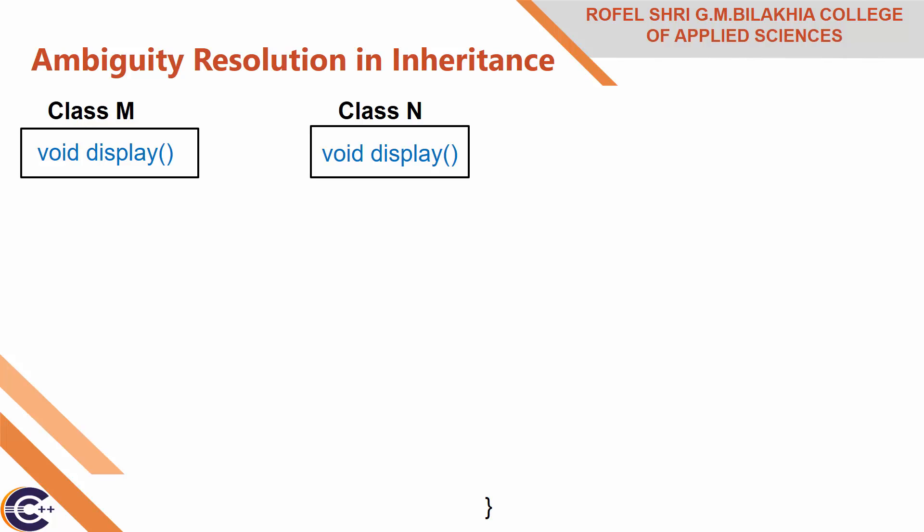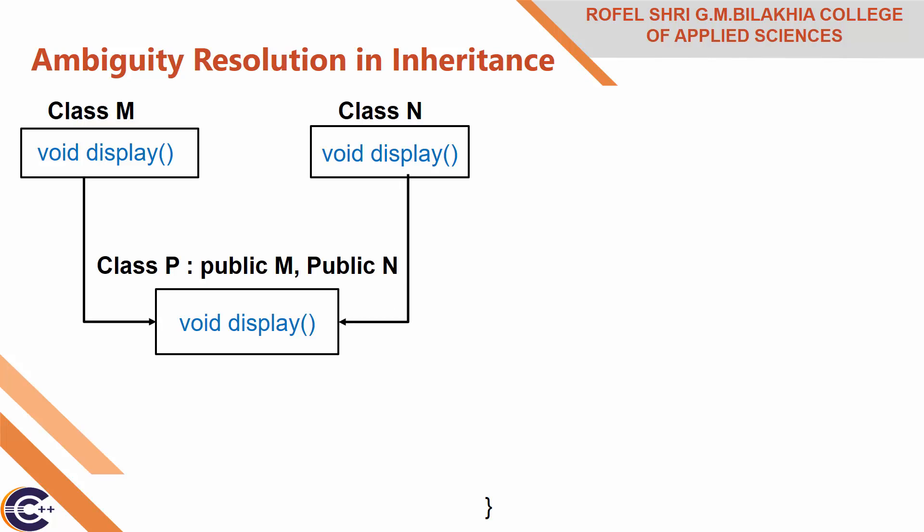Both class M and class N are base classes of class P. Class P is derived from class M and class N, and class P also contains a method with the same name as in class M and N — that is the display method. So here an ambiguity problem occurs. To resolve this ambiguity, we can define a name instance within a derived class, or we can use the scope resolution operator with the function name.